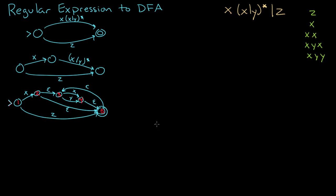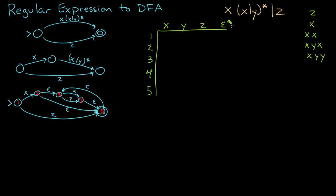Next step is to convert this into a chart with states one through five down the left and transitions X, Y, Z across the top, plus a column for epsilon star. From state one: on X we go to two, on Y nowhere, on Z we go to five. From state two: on X, Y, and Z we go nowhere. From state three: on X we go to four, on Y we go to four, on Z nowhere. State four is nowhere for X, Y, and Z. State five is also nowhere on X, Y, and Z.